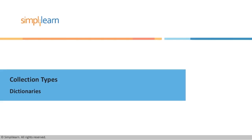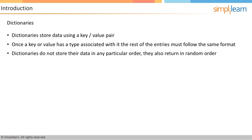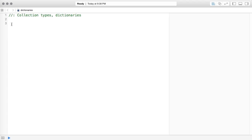Now we're going to continue talking about collection types and focus on dictionaries. Dictionaries are similar to arrays in syntax but they diverge from there. Dictionaries store data using a key-value pair. Once a key or value has a type associated with it, the rest of the entries must follow that same format. Dictionaries do not store or return their data in any particular order — they return data in a random order.